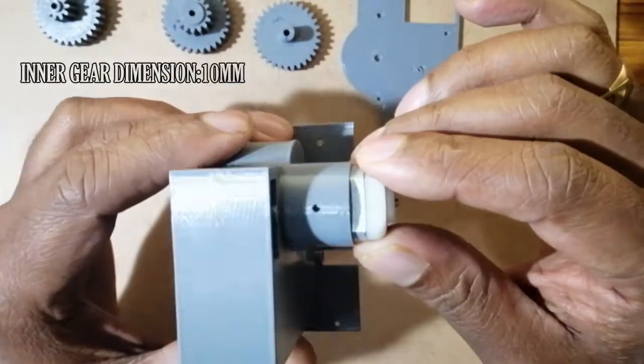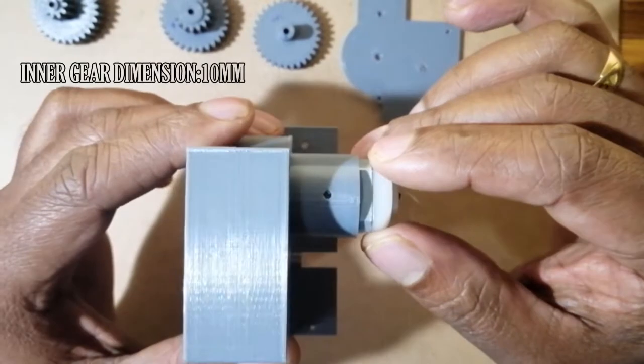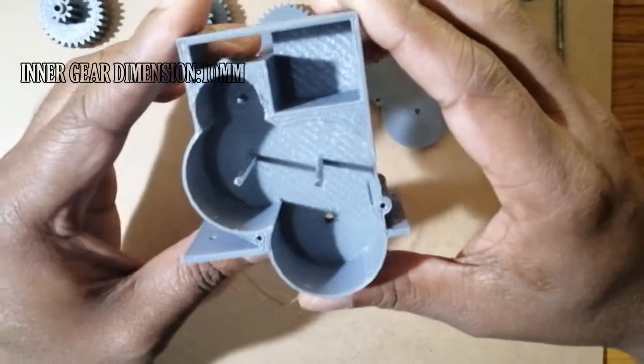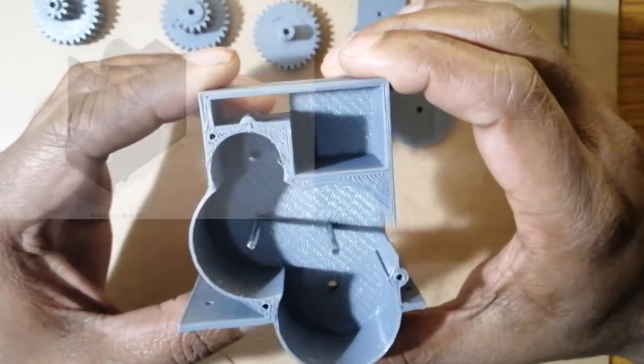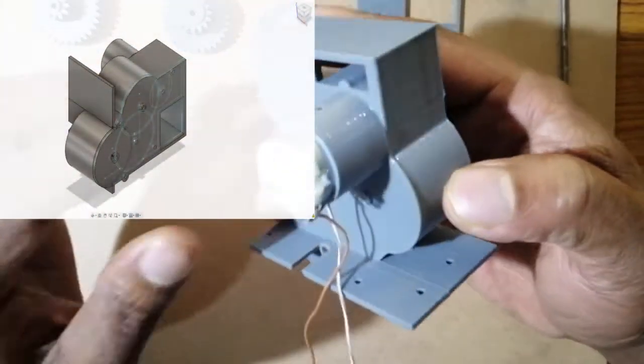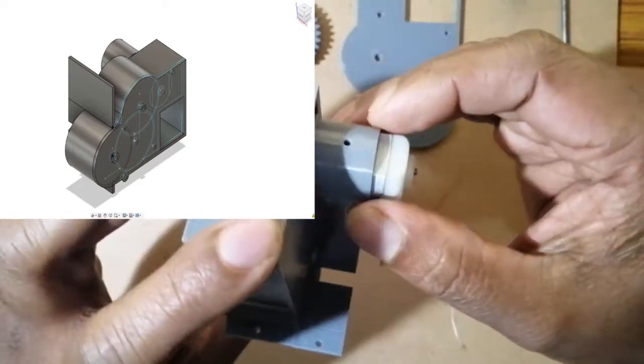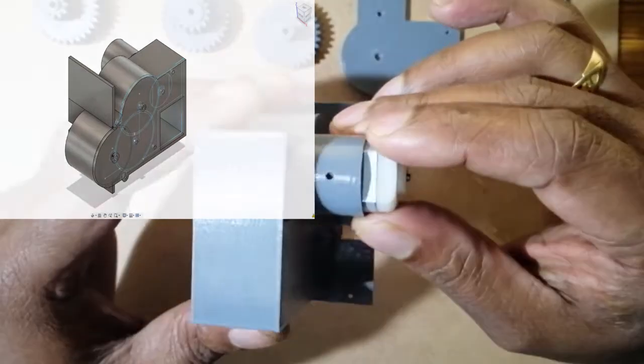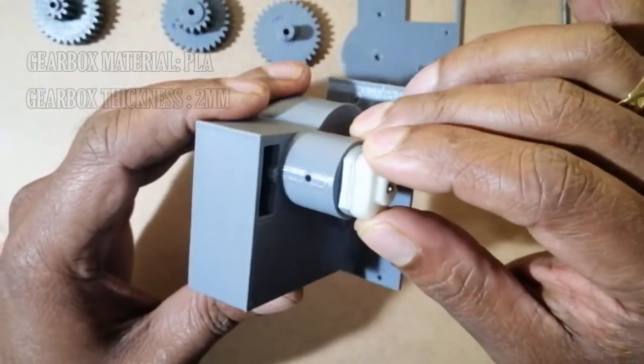So let's start. As you know, this is the housing of the gearbox which I have 3D printed. Like every time, I have done a mistake. I just inserted this DC motor before starting my camera.